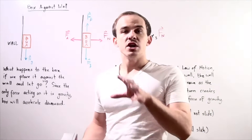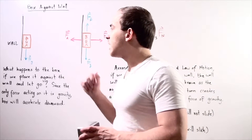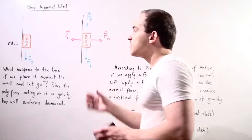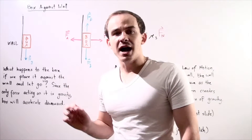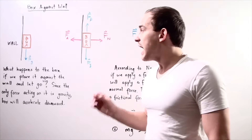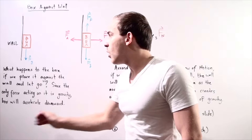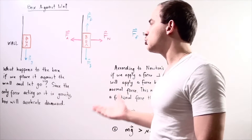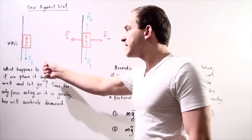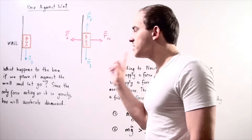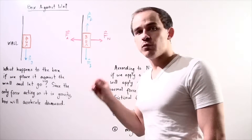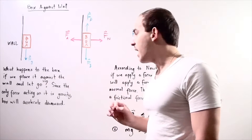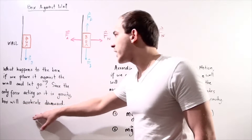But what exactly causes the box to fall? If we look at the diagram and all the forces acting on my box when I let go, the only force acting on my box is the force of gravity. So the only force acting along the y-axis is gravity, meaning we have a net force pointing downward. That net force accelerates my box downward.